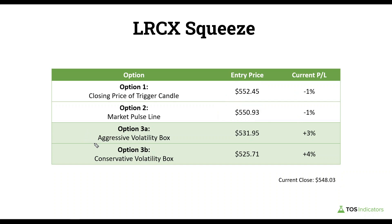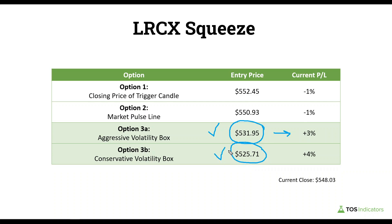Option three uses the volatility box, and there are two different models. With the aggressive volatility box, the entry price was 531.95, which was hit today, and you're currently sitting on a gain of three percent. If you use the conservative volatility box, that was an entry price of 525.71 — also hit today — giving you an unrealized gain of four percent based on the current close price.